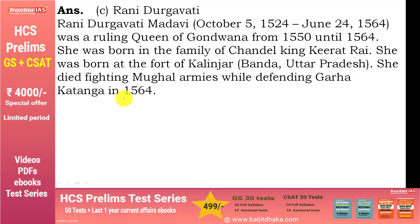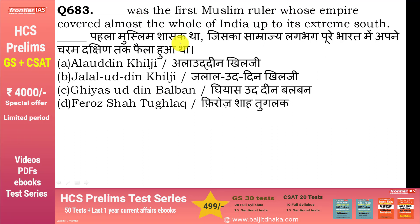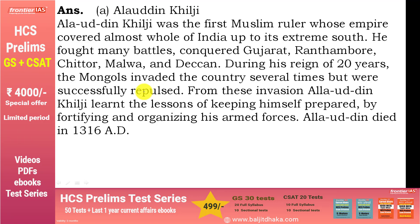Rani Durgavati — 1550 से 1564 तक, अपनी death तक, और वो Chandel king Kirat Rai के family में born हुई थीं. ये जानी जाती हैं कि इन्होंने अपने गढ़-कटंगा को Mughal armies के against defend किया, 1564 में. पहला मुस्लिम शासक कौन था जिसका साम्राज्य लगभग पूरे भारत में दक्षिण तक फैला था — वो था अलाउद्दीन खिलजी. इन्होंने गुजरात, रणथंभोर, चित्तौड़, मालवा, डेकन को conquer किया और Mongols को कई बार खदेड़ा, इसलिए इन्होंने एक large standing army maintain रखी.